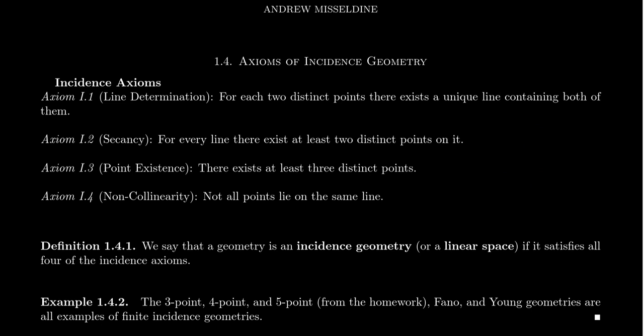The last axiom of incidence, number four, I'm going to call non-collinearity. Remember that points are collinear if they lie on the same line. Non-collinearity says that not all points live on the same line — if you take the set of all points, that is a non-collinear set; there is no line that contains all of those points. This was also often taken as an axiom for many of the finite geometries we studied. I believe for Young and Fano geometry, this was axiom three.